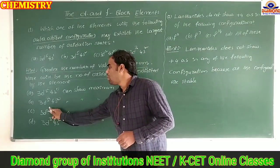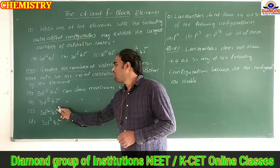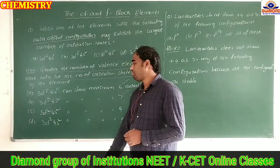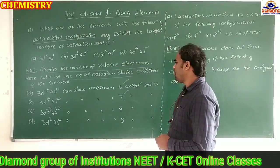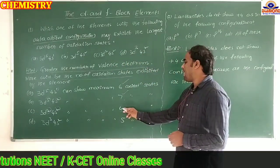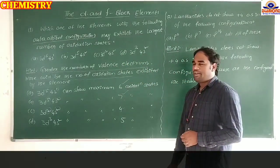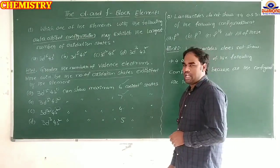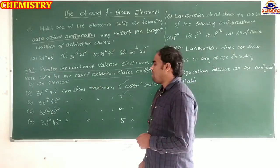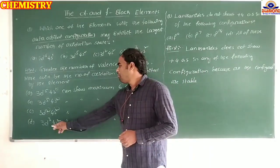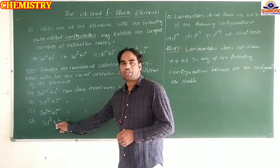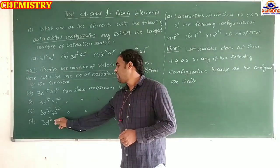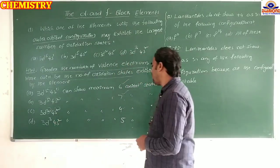For option C (3d²4s²): 2 + 2 = 4 valence electrons, so maximum oxidation number is 4. For option D (3d³4s²): 3 + 2 = 5 valence electrons, so maximum oxidation number is 5.